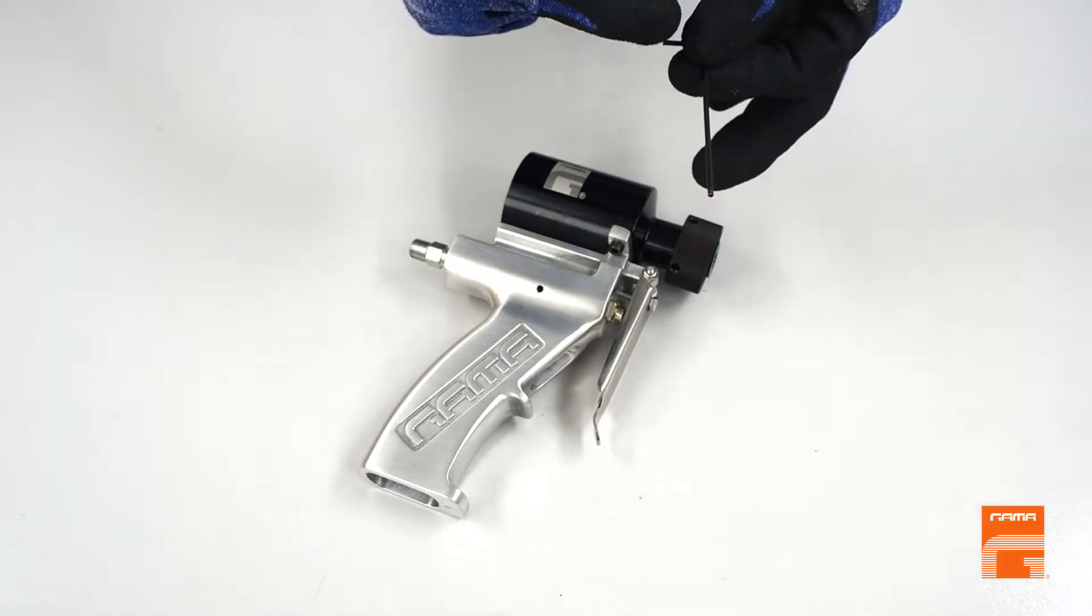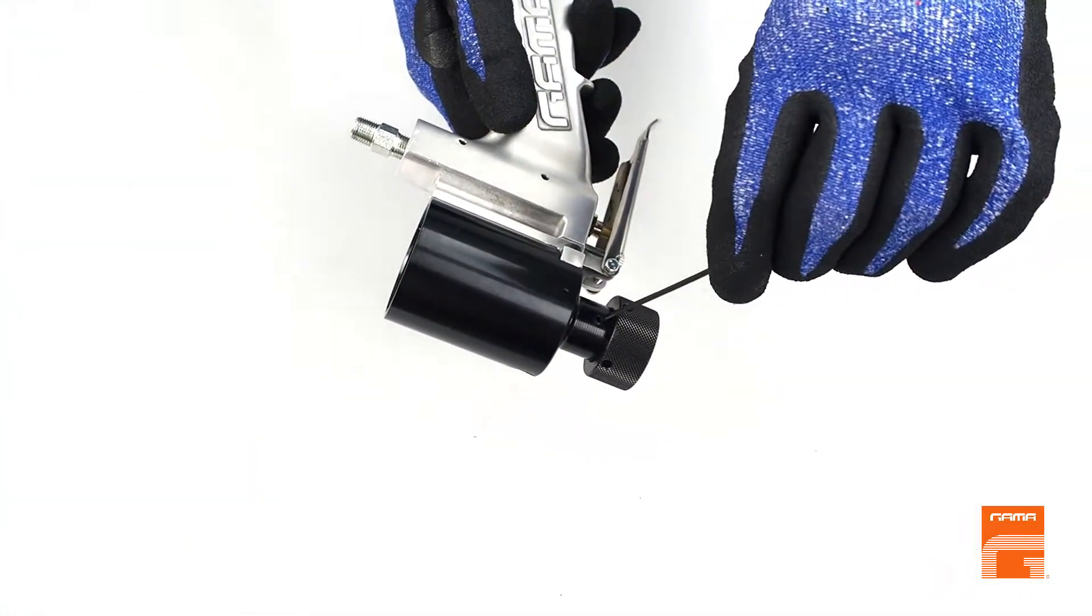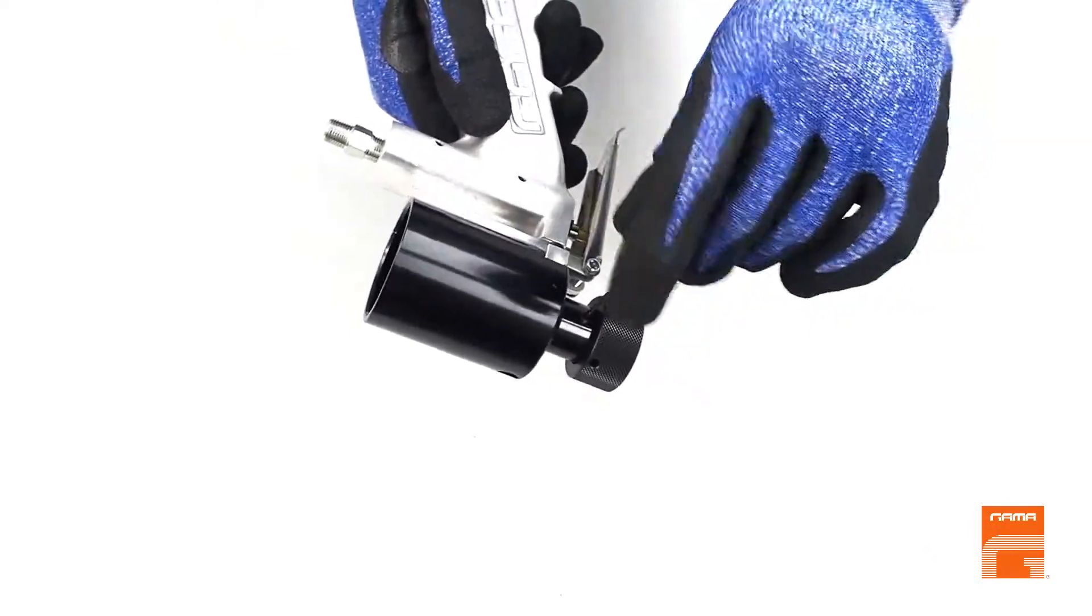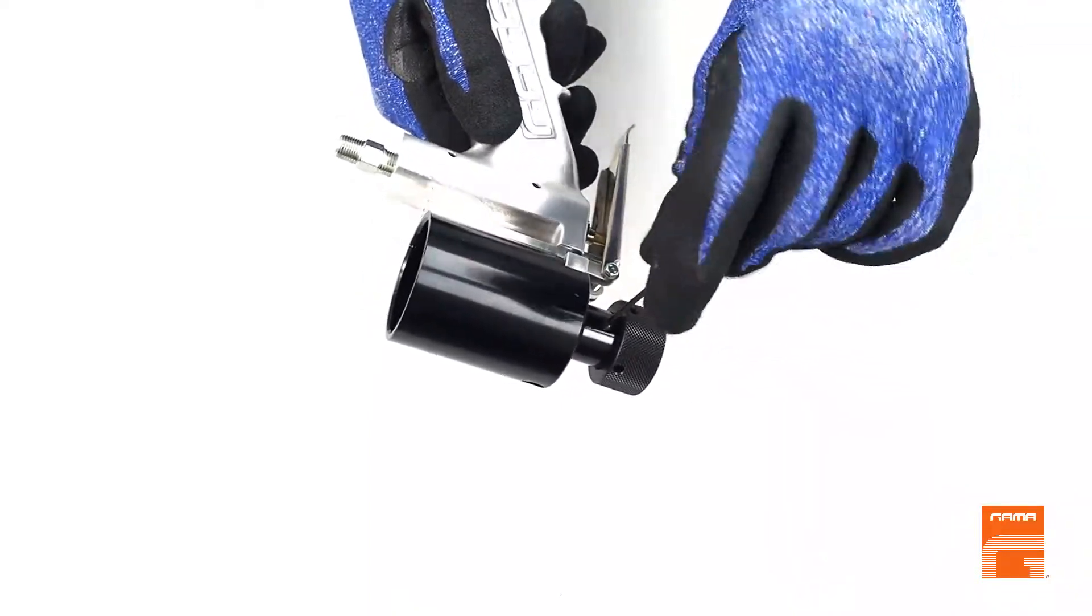Step 6: Use an allen key of 2 mm and extract first the plug located on the left side of the pneumatic cylinder.